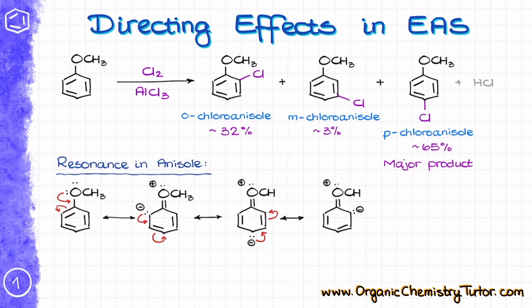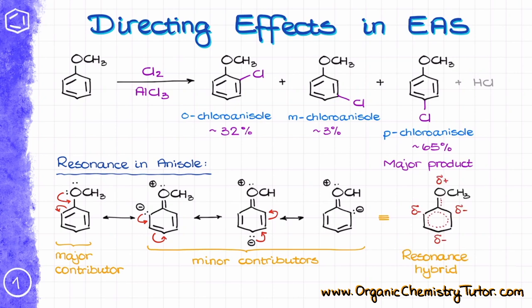Let's look at the resonance structures of the anisole molecule itself. We have an uncharged major contributor and three charged minor contributors. But what is more important is when we combine those into an overall hybrid. By looking at the hybrid structure, we get some idea of the electron density distribution in our molecule. We can see that we have a higher electron density in the ortho positions and in the para-position. We typically show partial charges with a delta sign — delta minus means a partial negative charge or higher electron density in that position.